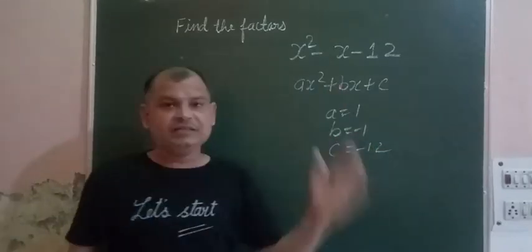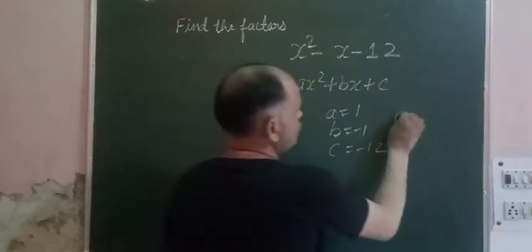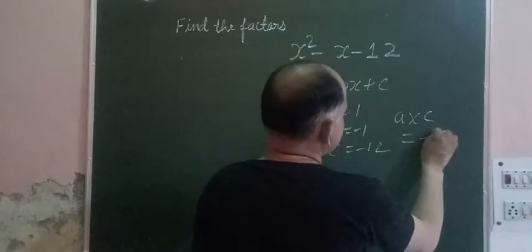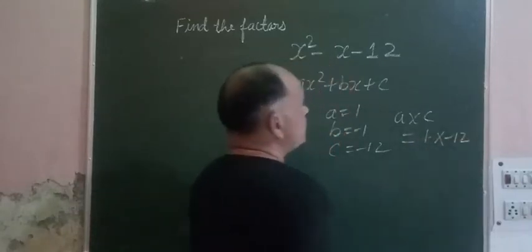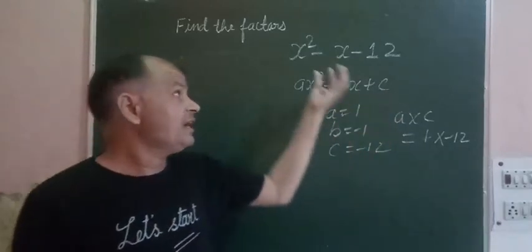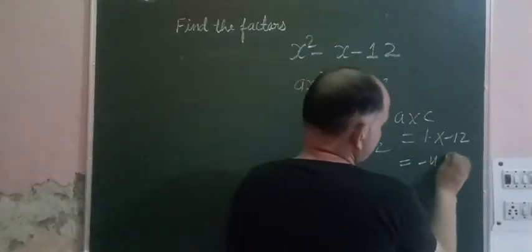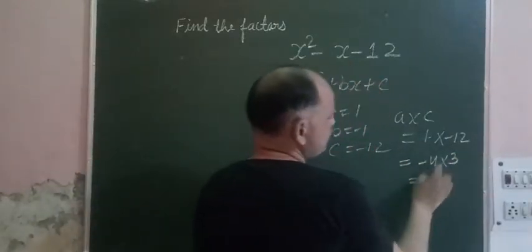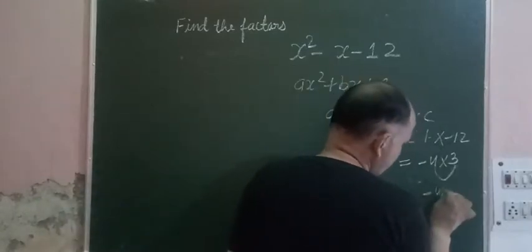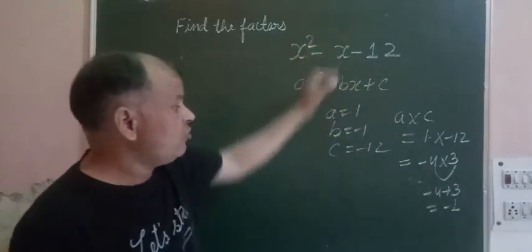In this type of expression, if we want to factor it, we multiply a into c. Here a is 1 and c is minus 12. Now we make factors of a into c in such a way that we can get this b which is minus 1. So we write it as minus 4 into 3. If we add these two factors, minus 4 plus 3, we get minus 1 which is the value of b in this expression.